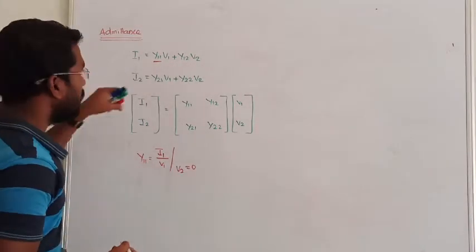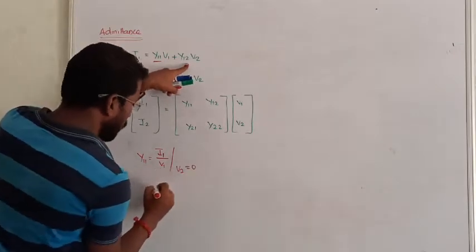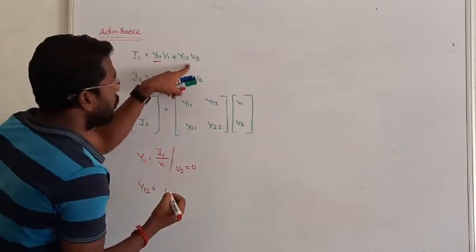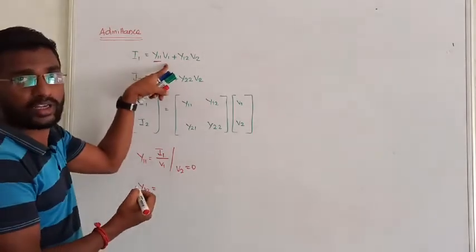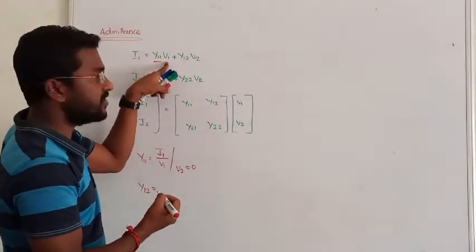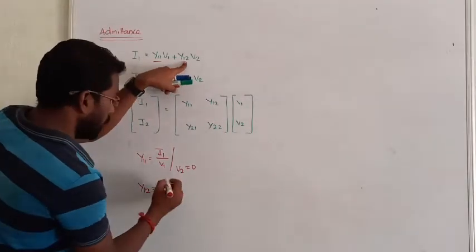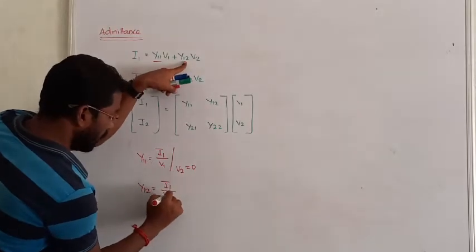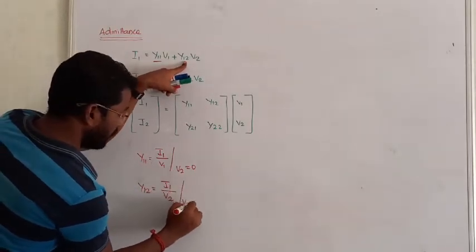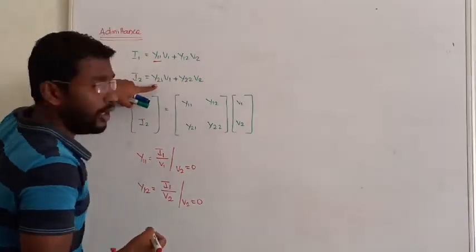Similarly, if you want to calculate y12, we have to make the value of v1 as 0. When v1 equals 0, y12 = i1/v2 where v1 = 0.